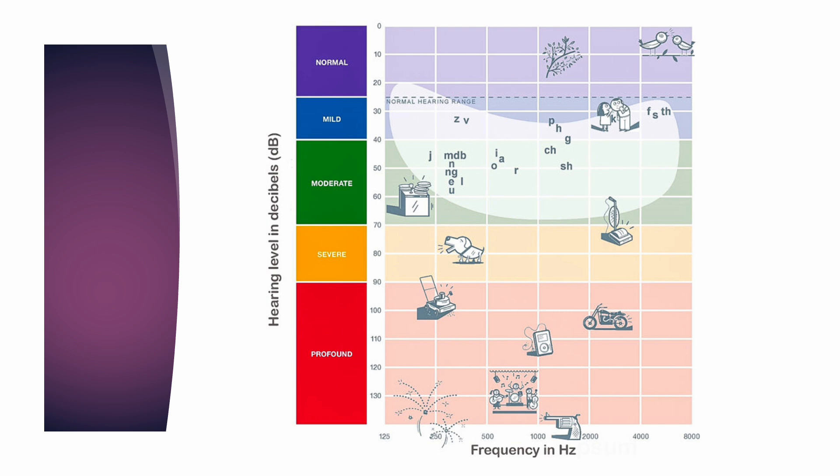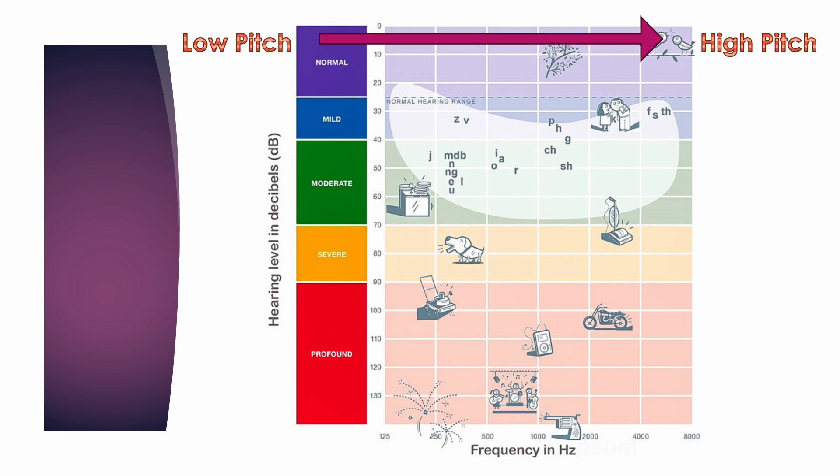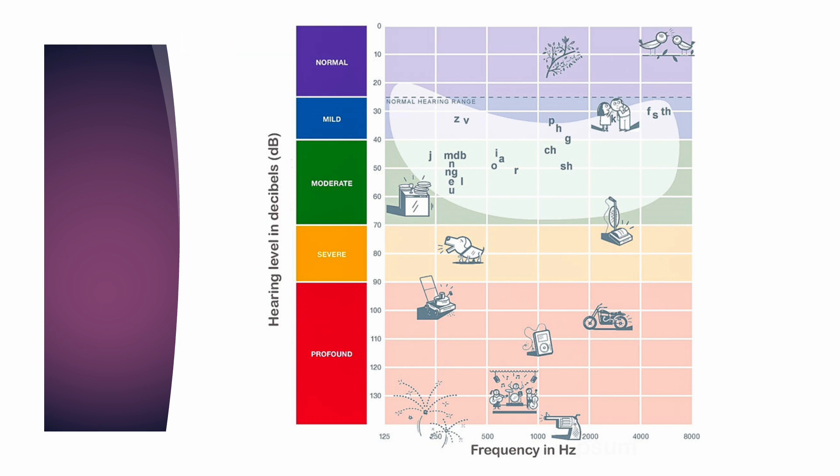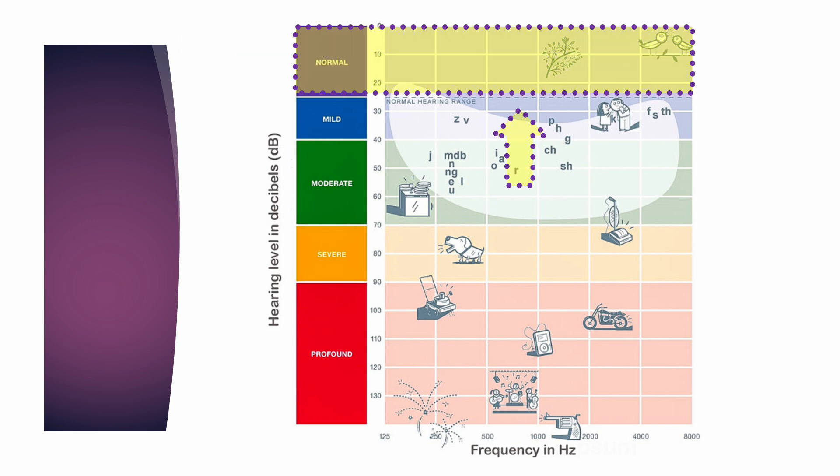Across the x-axis, we have frequency or pitch. On the left side we have low pitches, and on the right side we have high pitches. This highlighted section, from 20 decibels and above, is the range for normal hearing sensitivity.